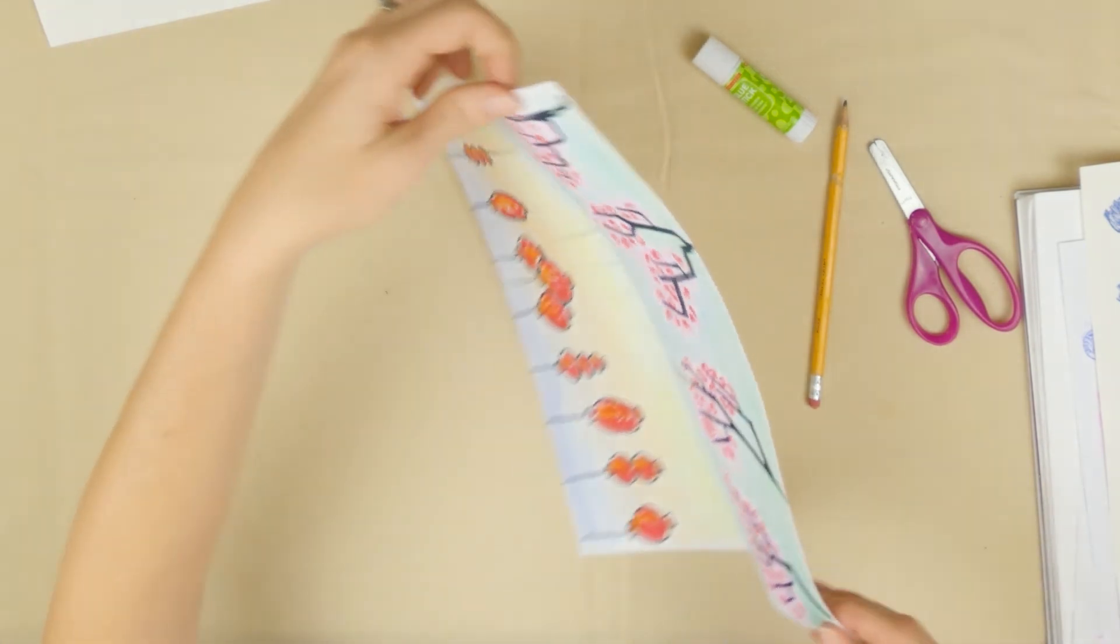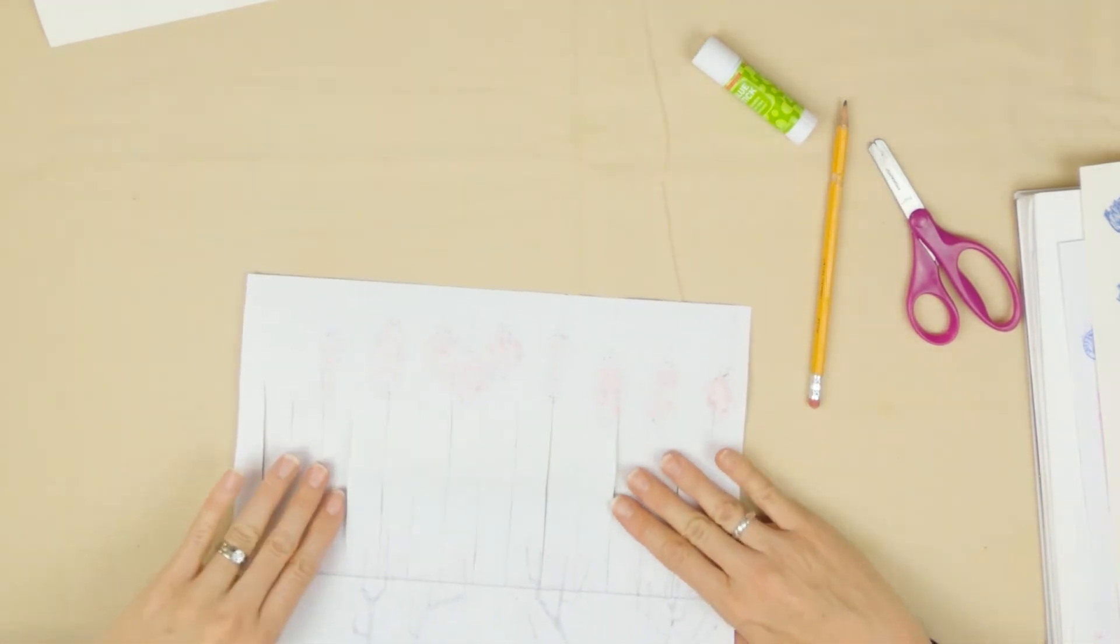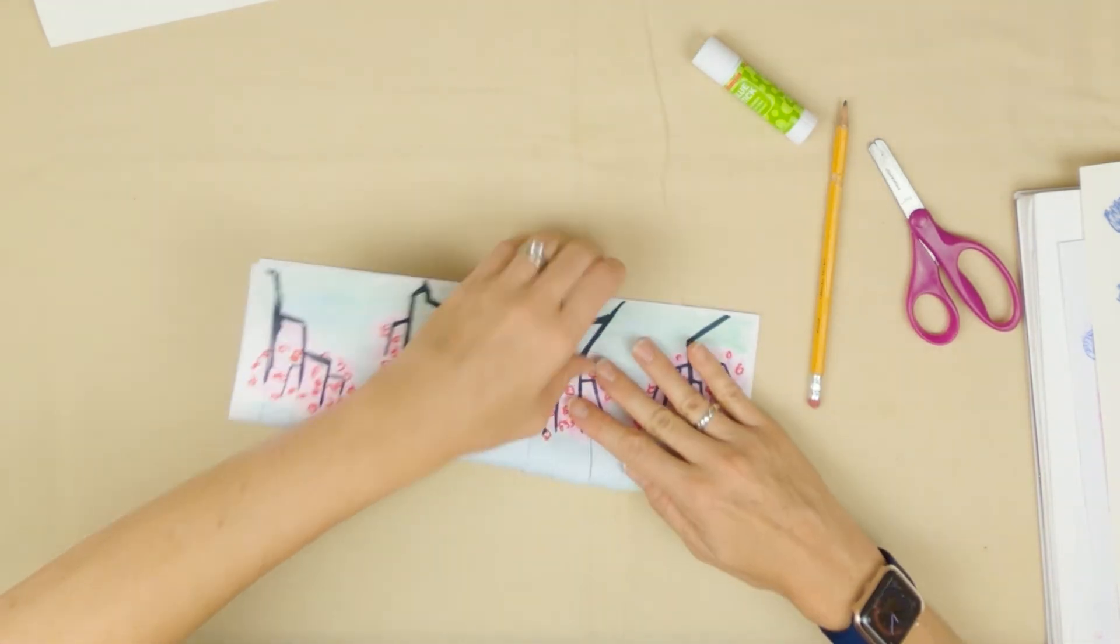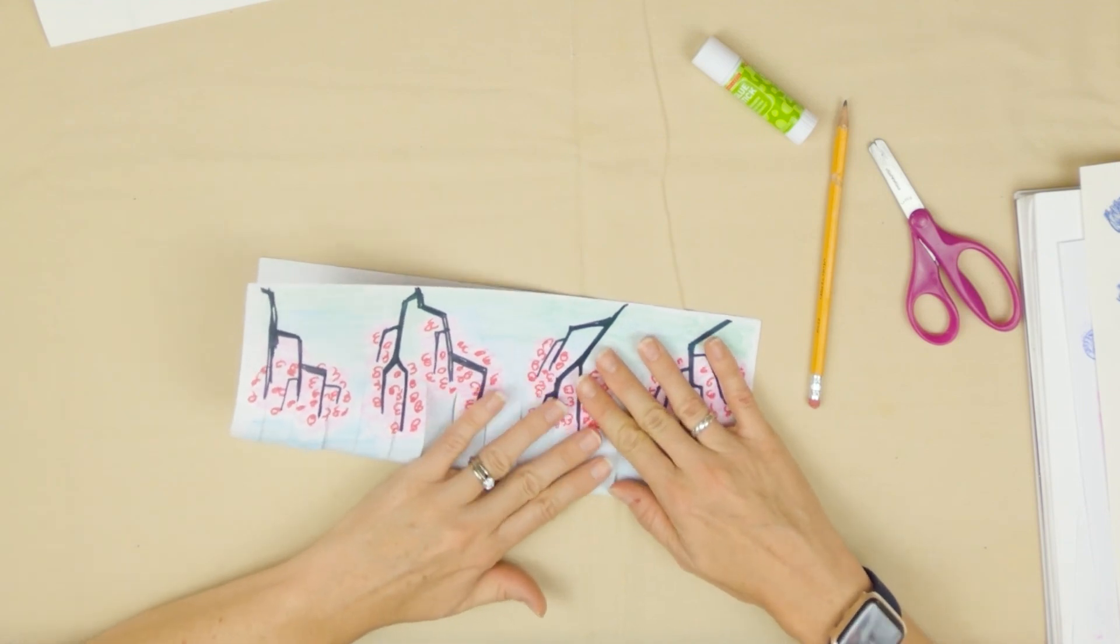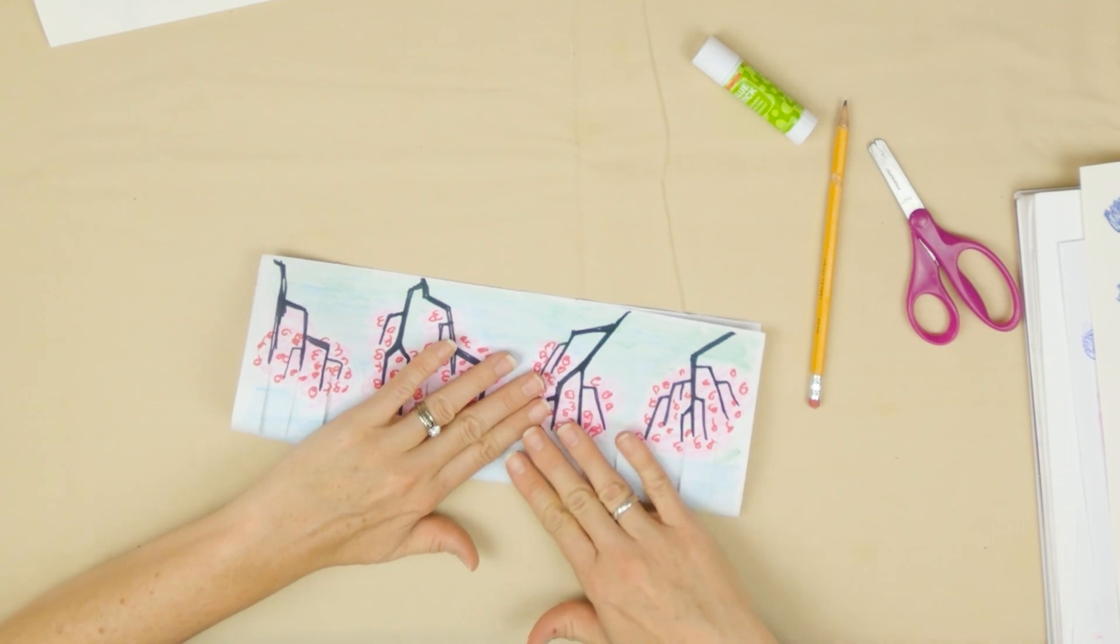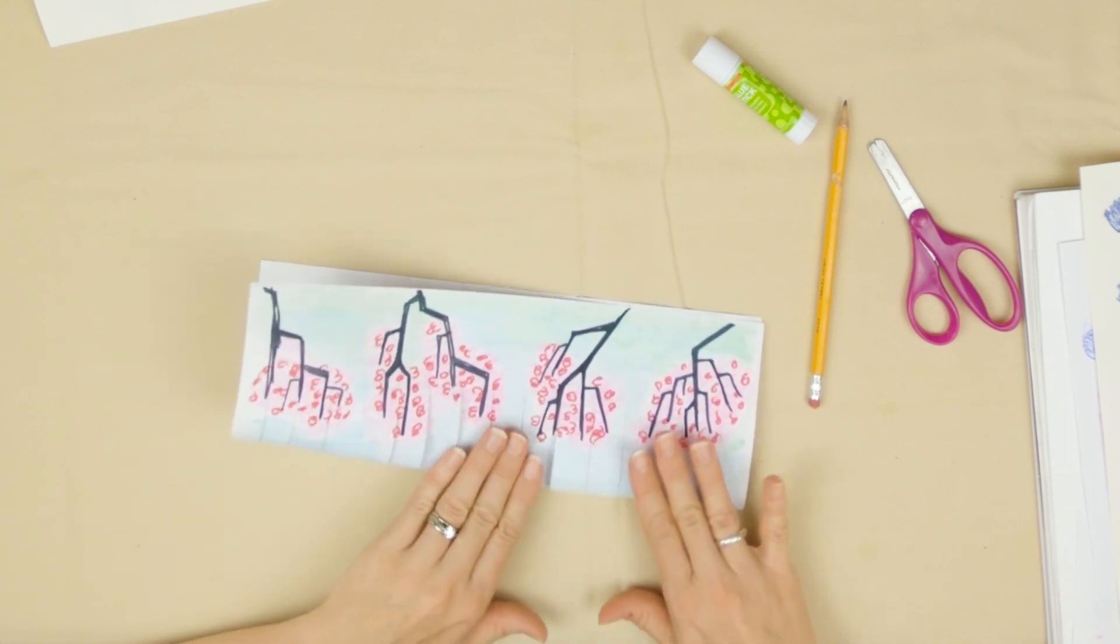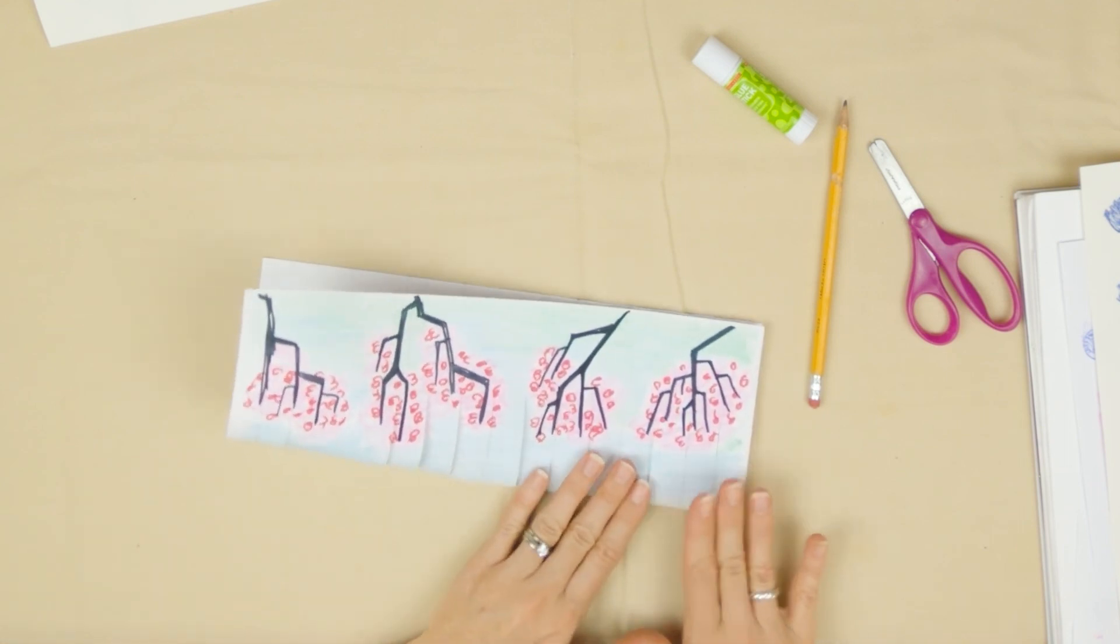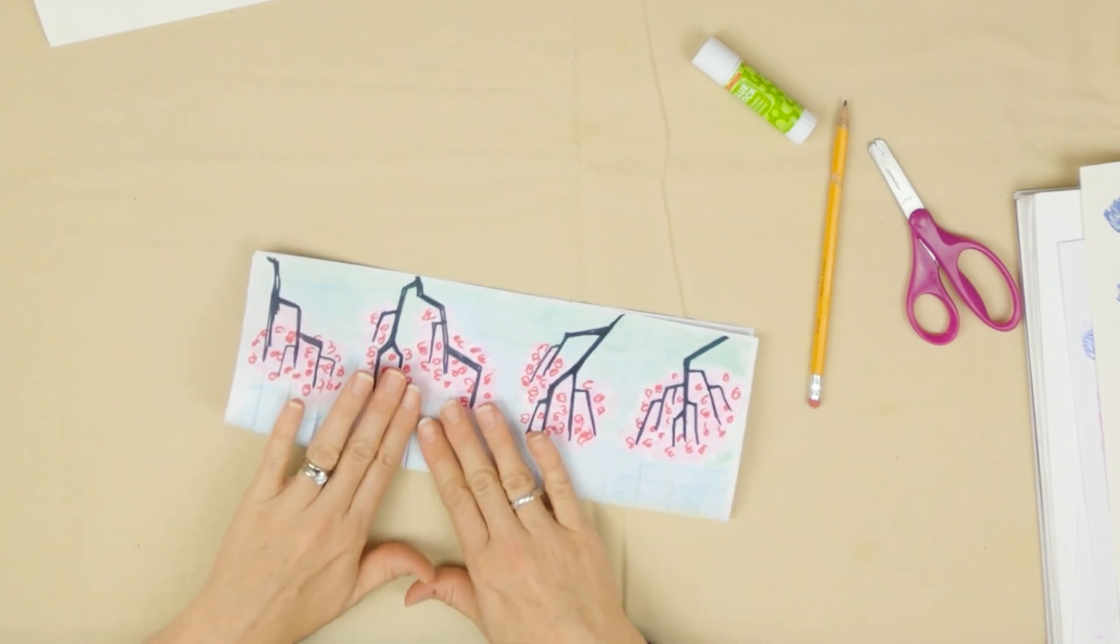To do that, I'm just going to flip my paper over and gently fold it back like this. I did it this way because I didn't want to draw lines on my design. So just very gently kind of press down on that fold and it will just automatically fold where it's already folded.